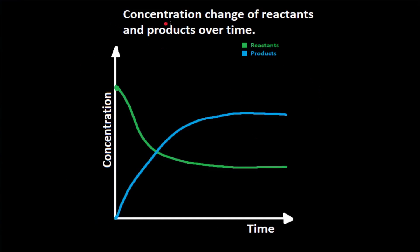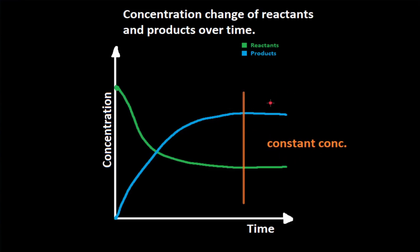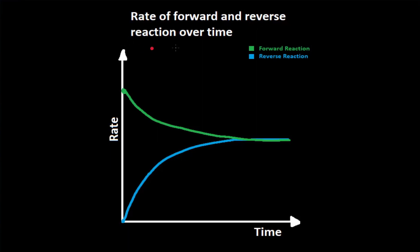This graph illustrates the concentration change of reactants and products over time. Initially we have only reactants, and as time goes by, reactants are being consumed and products are being produced. Equilibrium is reached in the area where we have a constant concentration — the reactants and products are not going to change in amounts. Basically when the lines turn straight, equilibrium is reached.